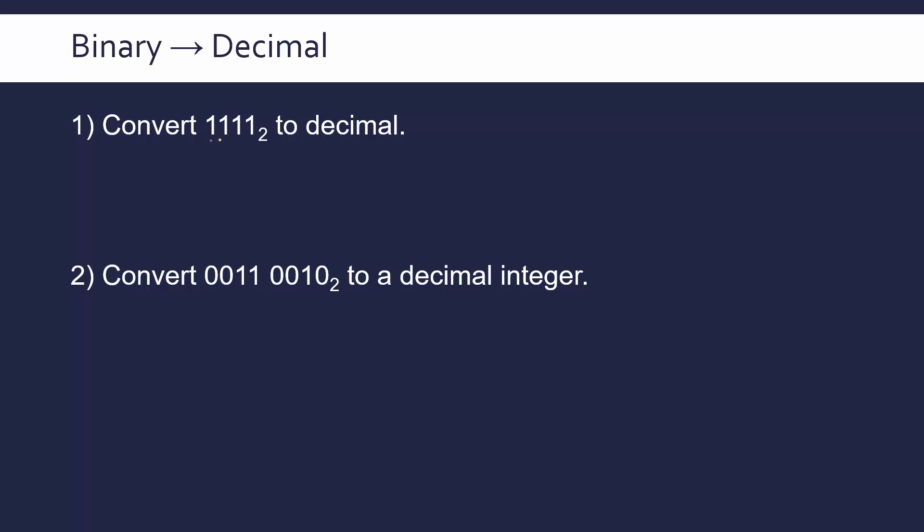First of all, converting 1111 to decimal. Now, we know this is in binary because I've done a little 2 subscript. This just shows we are in binary because if you didn't have the 2, it could be 1,111. If it said you're doing it from binary, you should imagine that, but the 2 can be helpful.